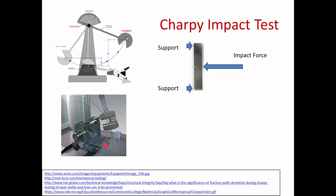The hammer is originally raised to a height h. If there's no sample, the hammer will swing down and then back up to the same height h, assuming a frictionless bearing. When you put a sample in the way of the hammer, energy is absorbed by the sample when it breaks. The more energy that is absorbed, the lower the final height h2. If very little energy was absorbed, the hammer would swing up to a fairly high height, and the scale would indicate the amount of energy absorbed.